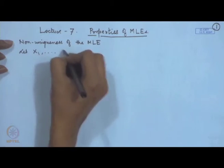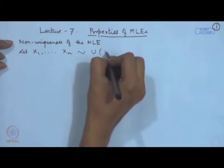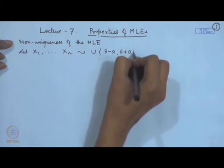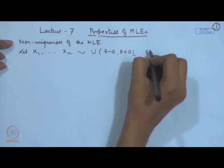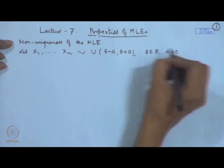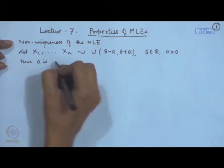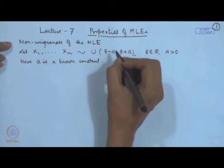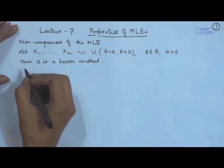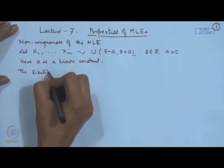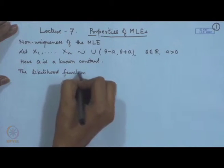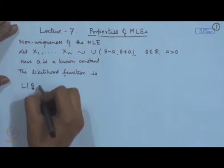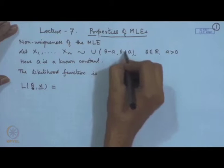Let us have a sample x1, x2, ..., xn from a uniform distribution on the interval theta minus a to theta plus a, where theta is a real number and a is a positive known constant. The problem is to estimate the parameter theta of this uniform distribution. That means the spread is from theta minus a to theta plus a. Since theta is unknown, we do not know the starting and end point of the spread. Let us consider the likelihood function.